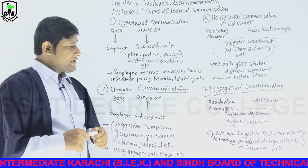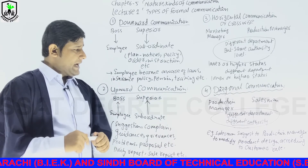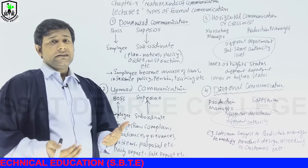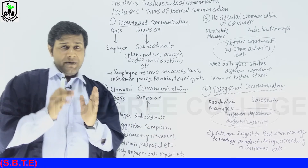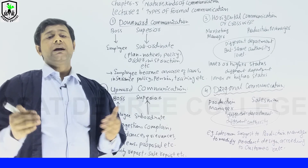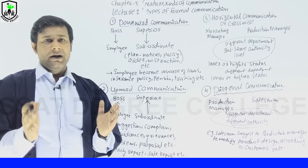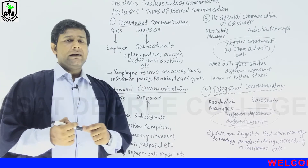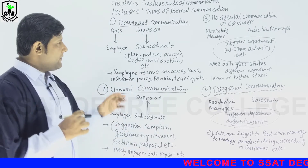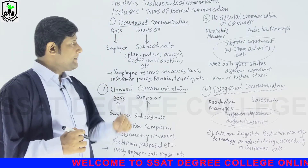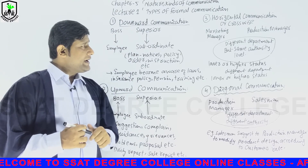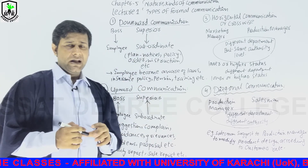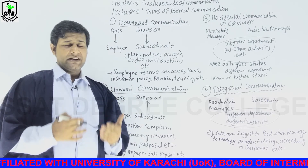For example, as I have written, a salesman suggests to the production manager to modify the product design according to the customer's needs. The salesman is communicating with the production manager of another department — they have different status and different departments. When they communicate for the benefit of the organization, that is called diagonal communication. So we have discussed all four types of formal communication: downward, upward, horizontal, and diagonal communication.